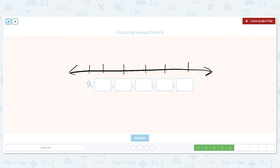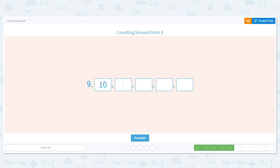So then what comes after nine? Ten. Good job. What comes after ten? Eleven, then twelve, then thirteen, then fourteen. Good job.